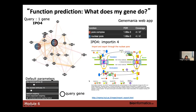Now some applications of GeneMania, mainly based on my projects and how I use it — hopefully this gives you ideas for your own project. The first application: we query one gene, we don't know the function, and it predicts the function. I tried it with IPO4 from my own work. My question was to do a query of IPO4, which is an importin — its role is to import proteins into the nucleus. IPO4 is part of the importin family.